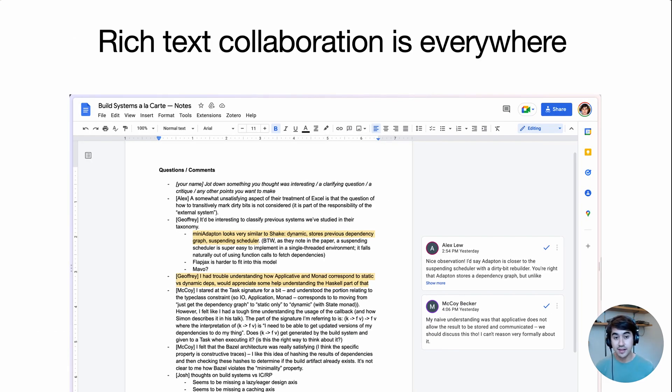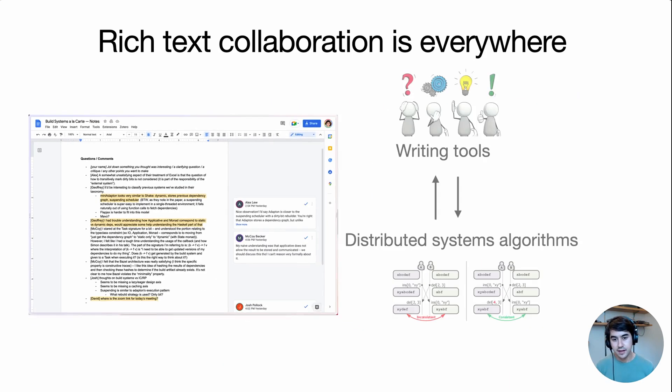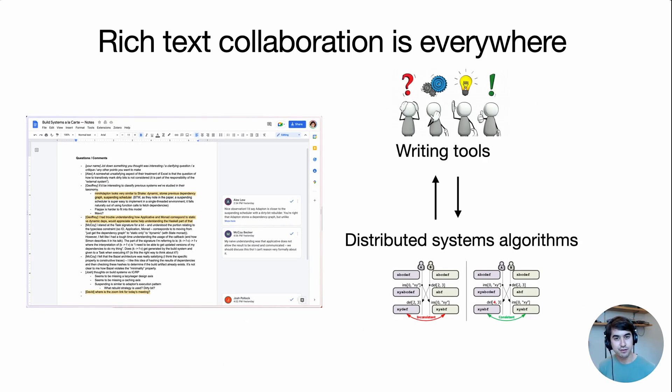These days, rich text collaboration is everywhere. We all use tools like Google Docs as part of knowledge work, and these tools don't operate on plain text, they operate on rich text, which includes things like bold and italics and other formatting. Now these tools and interfaces for writing rest on top of distributed systems algorithms. These algorithms help ensure correctness in the collaborative editing process, and they also help define the kinds of collaboration that are even possible to begin with.